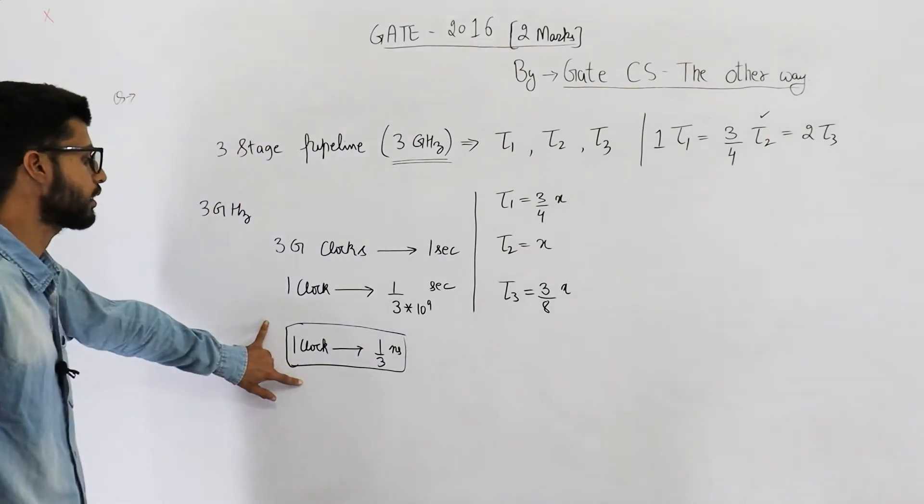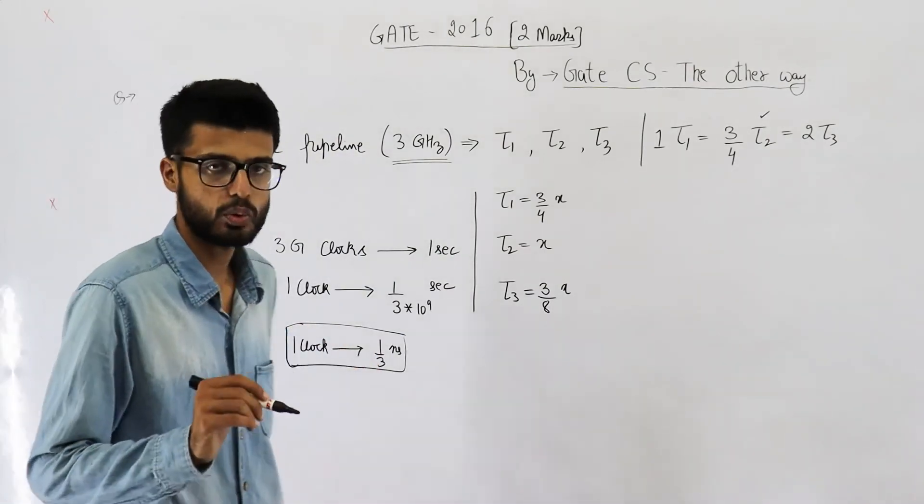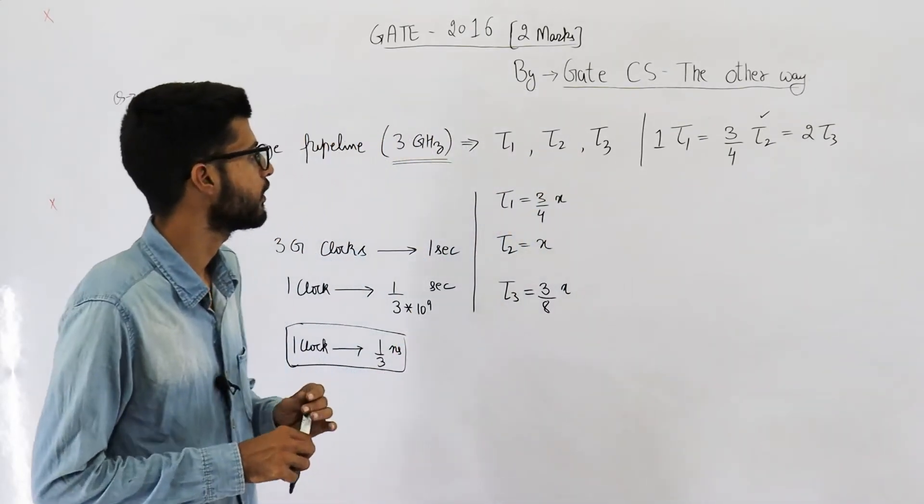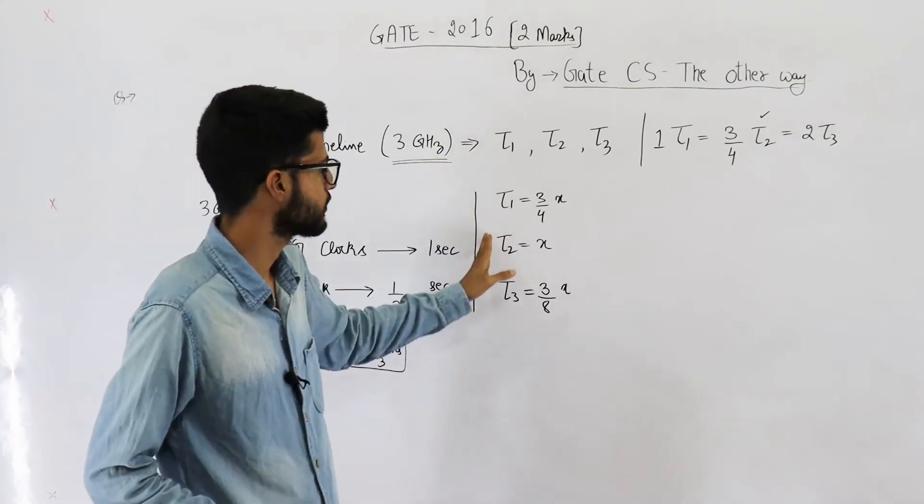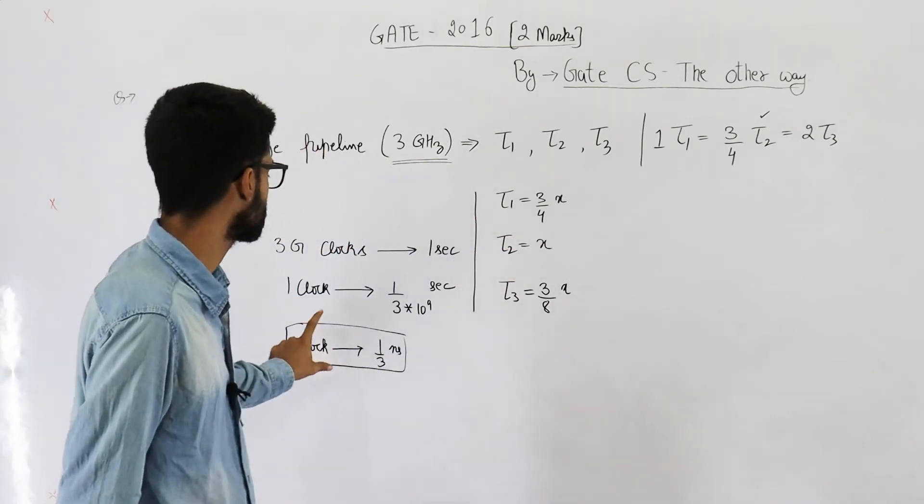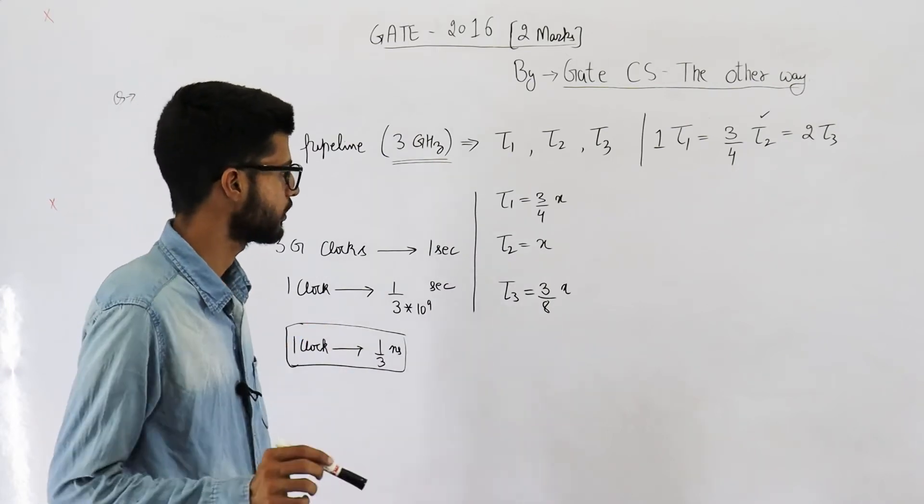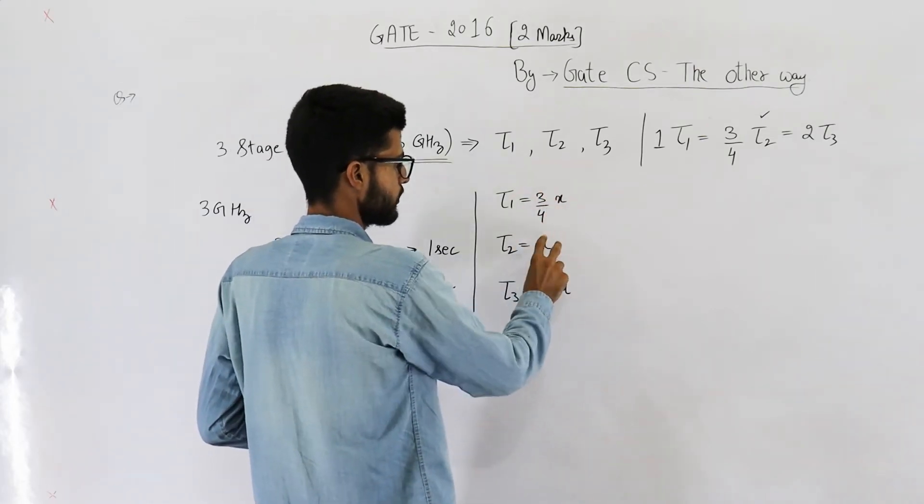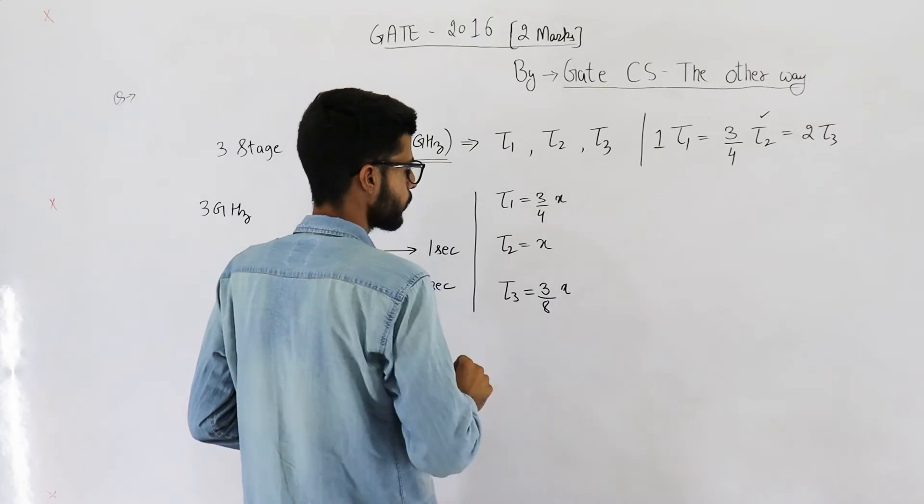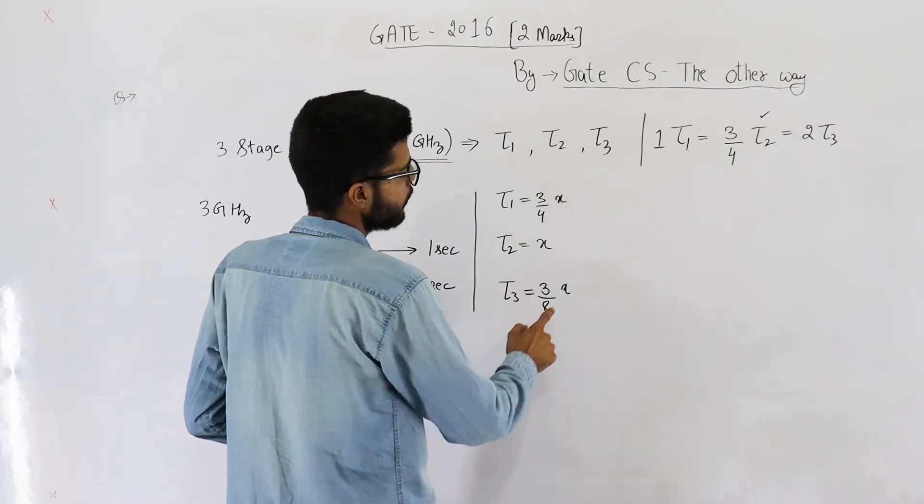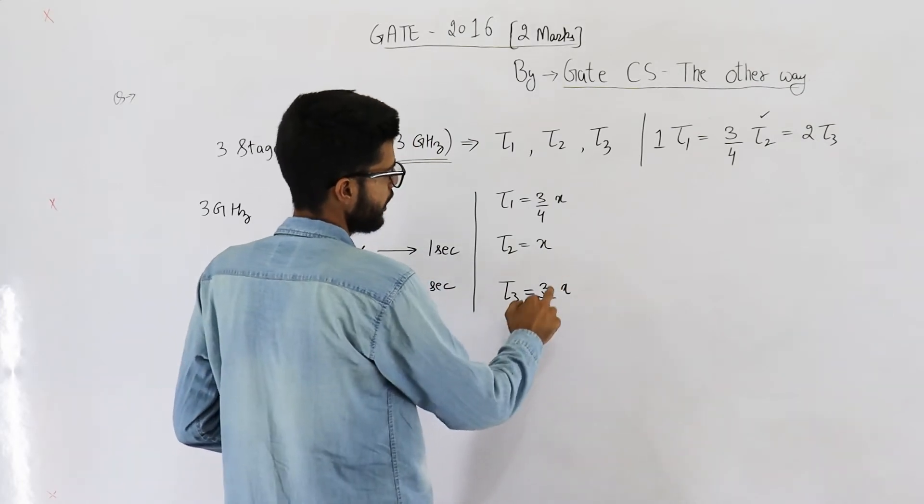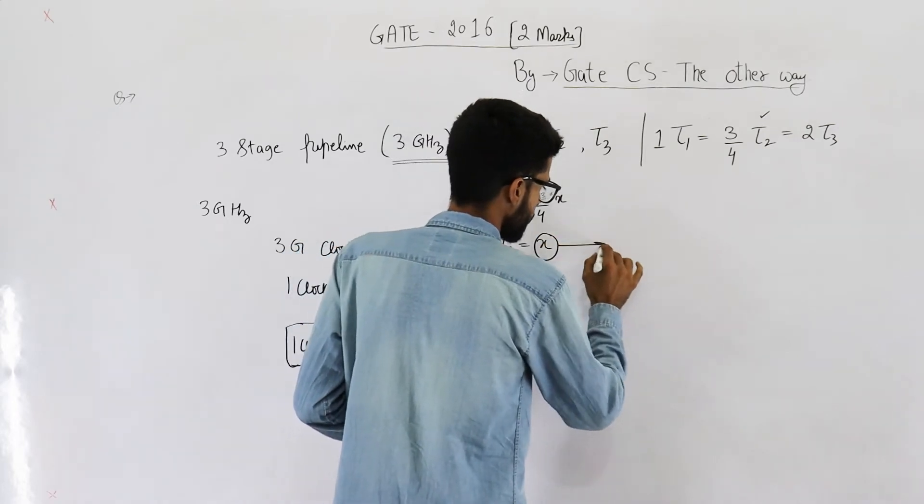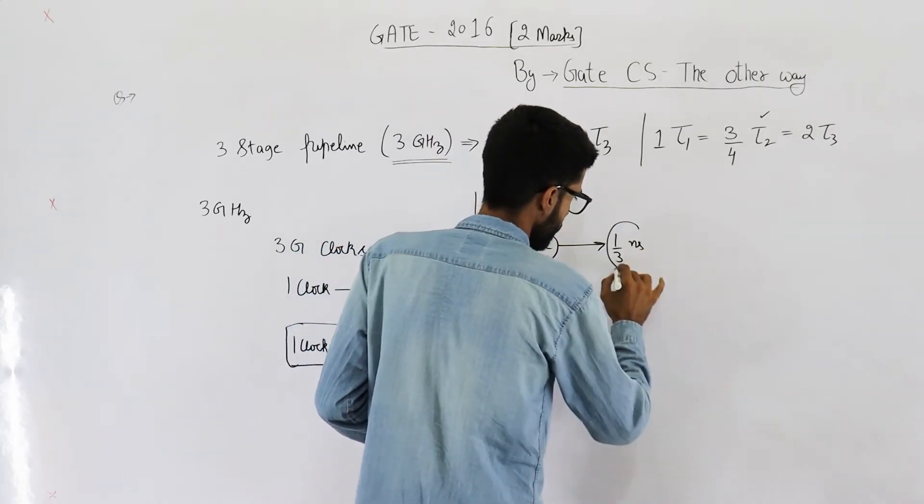Now, we have already seen that time period of clock is 1 by 3 because 1 clock requires 1 by 3 nanoseconds. We also know that when we have uneven delays, the time period depends upon stage with the largest delay. So, 3 by 4 is less than 1, that means tau1 is less than tau2. Similarly, 3 by 8 is also less than 1. So we are multiplying x with something less than 1. That means this one will be the largest one. So, x comes out to be 1 by 3 nanoseconds.